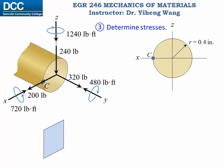For the shear force along the x direction (200 pounds), recalling the shear stress distribution caused by shear forces, at point C the shear stress caused by this shear force is zero.